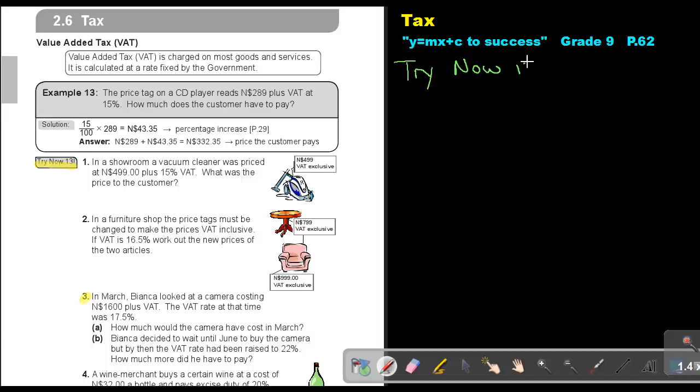Try Now 13. Let's look at number 3. In March Bianca looked at a camera costing N$1,600 plus VAT. The VAT rate at that time was 17.5%. How much would the camera have cost in March?